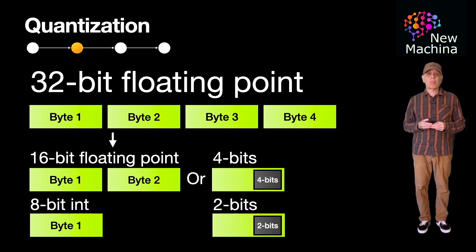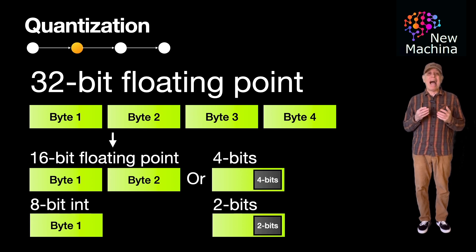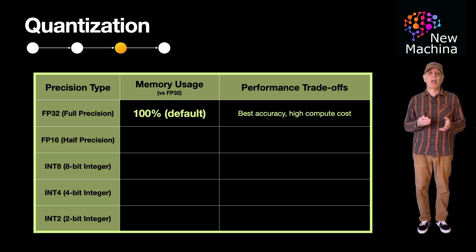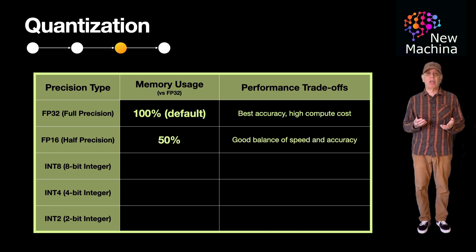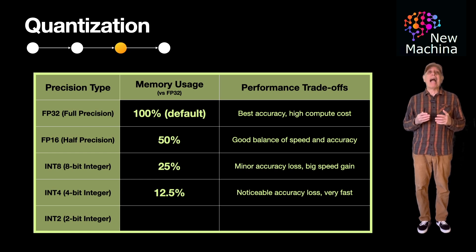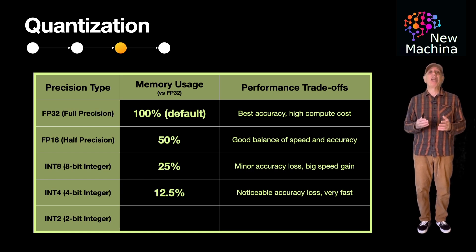What are the trade-offs with quantization? While quantization significantly improves efficiency, it can lead to some loss of model accuracy, though there are some advanced quantization techniques that can help mitigate the degradation. Here's a quick summary generally describing trade-offs between memory usage and model performance versus precision type. Full precision gives you the best accuracy but higher memory and compute costs. Using floating point 16 at half the precision, you get a balance between speed and accuracy. At int 8, with one-quarter of the precision, you start to get more loss of accuracy but a bigger speed gain. At int 4, you start to notice more accuracy loss, but you get even more speed improvements.